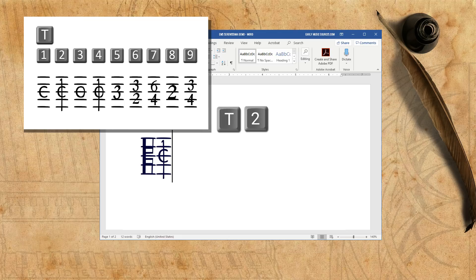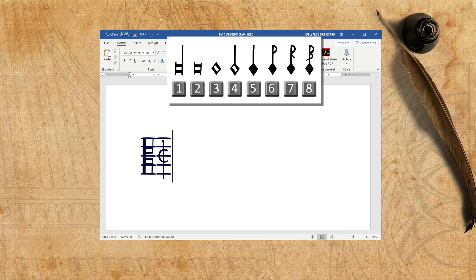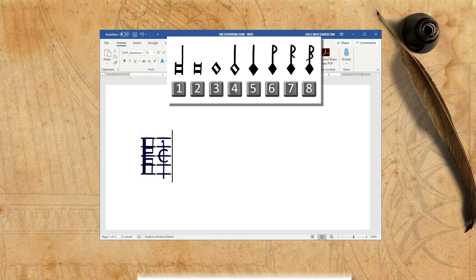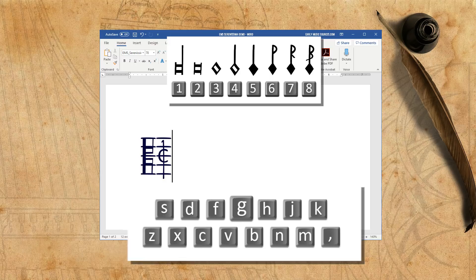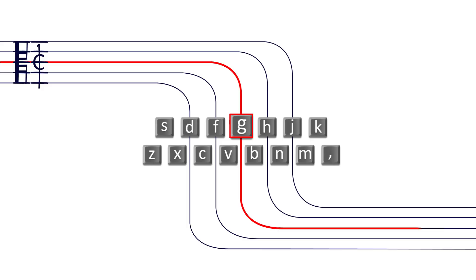The note values are the numbers, from 1 to 8, and once you type a note value, you may press one of the 15 placement keys to place it where you want it on the staff. The placement keys are centered around the key G, which is on the middle line of the staff. Other keys on that row are for placements on the other lines, and keys on the row below are for placements in between the lines.